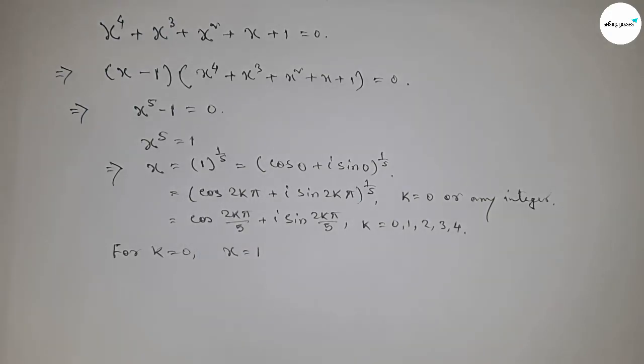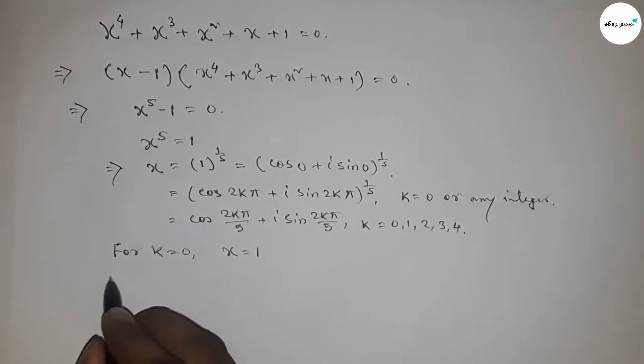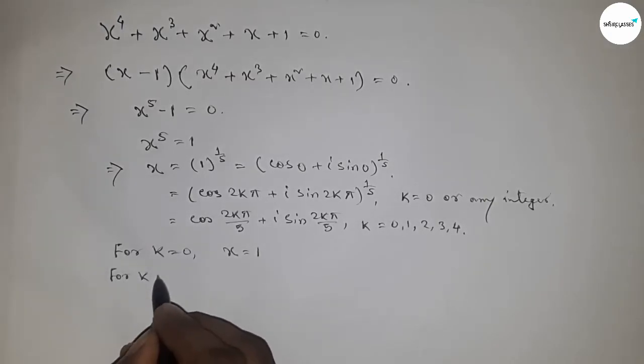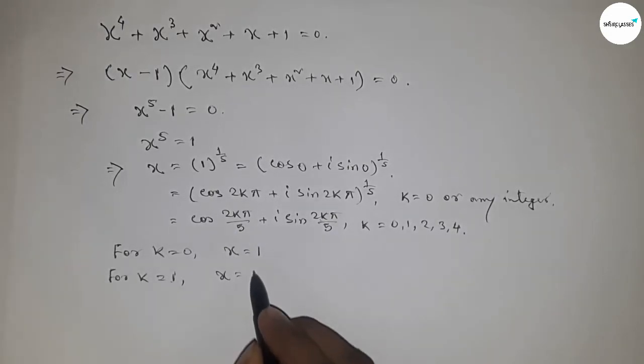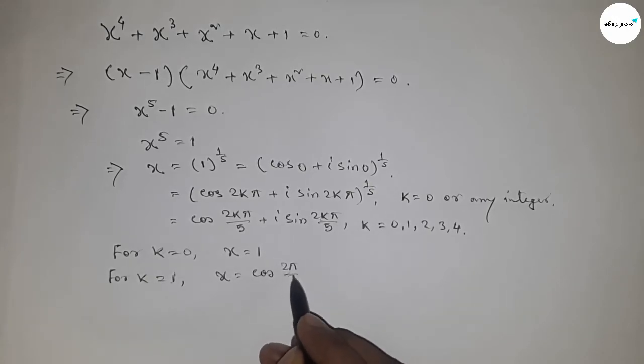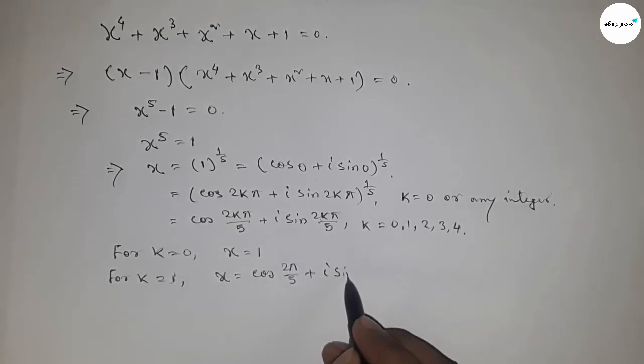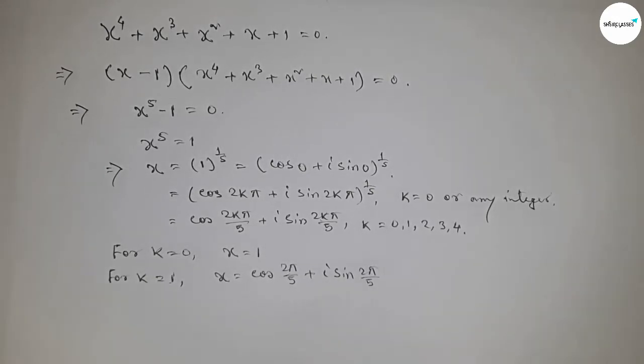here, x = cos(2π/5) + i sin(2π/5). For k = 2, if you put 2 here, x = cos(4π/5)